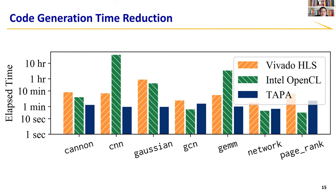This slide shows the RTL code generation time reduction brought by TAPA, also in logarithmic scale. The more tasks are instantiated, the more speedup TAPA can bring. The average speedup is 6.8x.